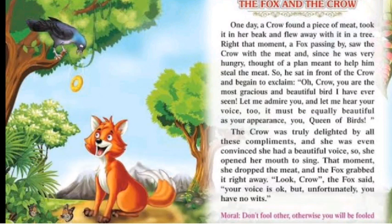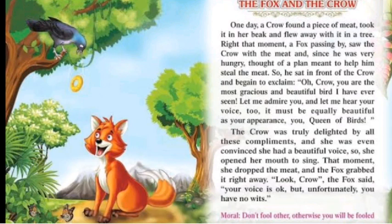The moment she opened her mouth, she dropped the meat, and the fox grabbed it right away. No sooner had she opened her mouth than the piece of meat fell from her beak, and the clever fox took it and ran away. The fox then said: 'Look, crow — your voice is okay, but unfortunately you have no wits.' The fox told the crow she was more foolish than her harsh voice, and that she didn't have enough brain to understand her own weakness.